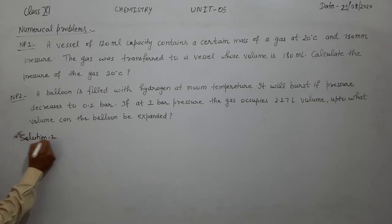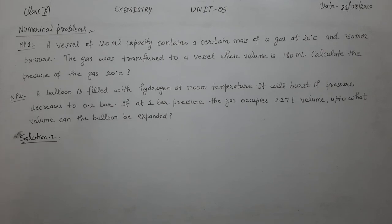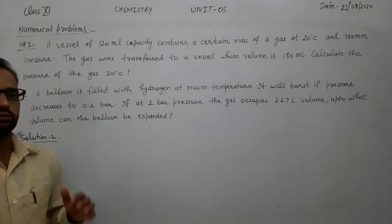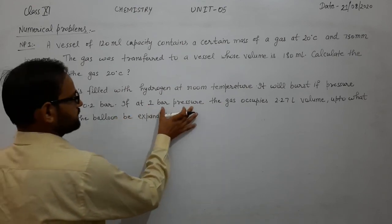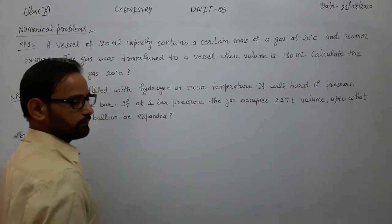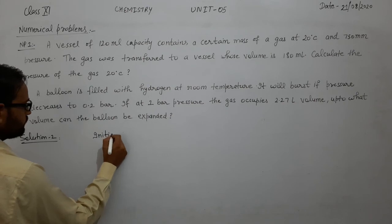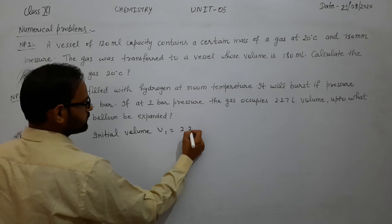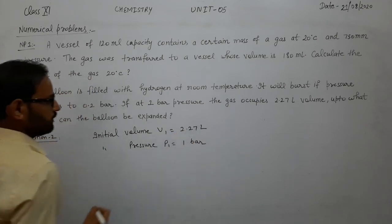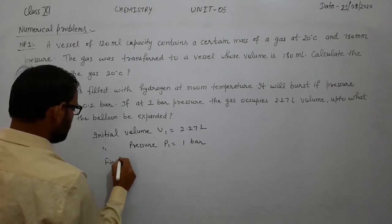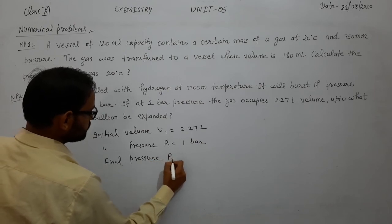Solution of numerical 2: the balloon is filled with hydrogen gas at room temperature. As you know, pressure and volume are inversely related — if pressure increases, volume decreases, and if pressure decreases, volume increases. At one bar pressure the gas volume is 2.27 liter, so initial volume V1 is 2.27 liter and initial pressure P1 is one bar. The final pressure P2 is 0.2 bar.